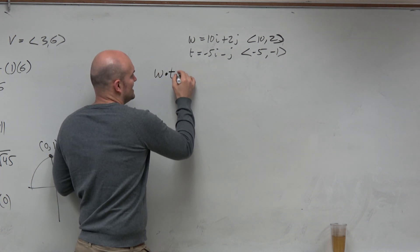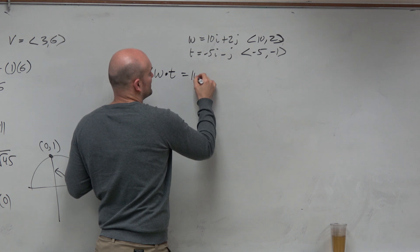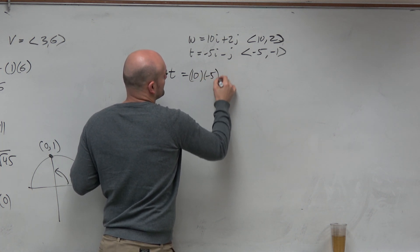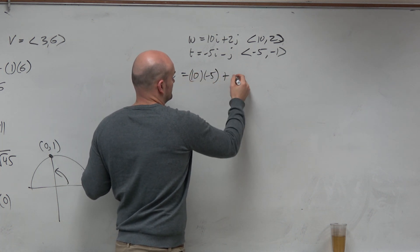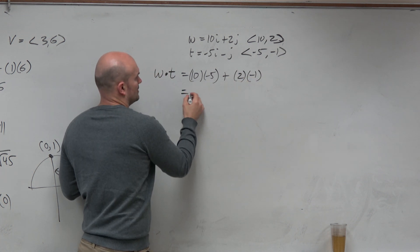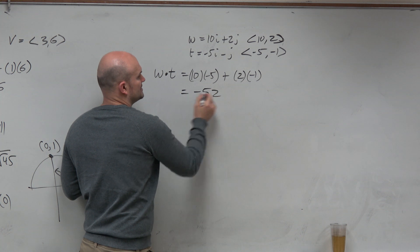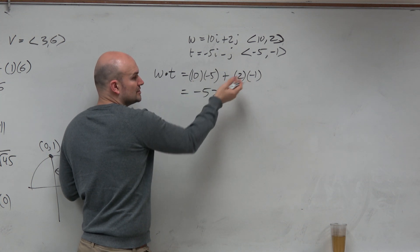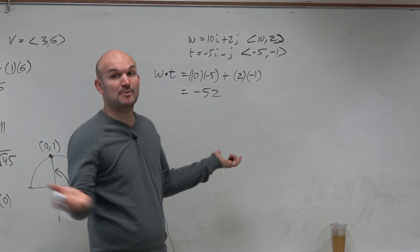W dot T is just going to be the product of the first two components, 10, negative 5, plus the product of my second two components, 2, negative 1. So in this case, I get a negative 52. Negative 50 plus negative 2, negative 52. So we know they're not perpendicular.